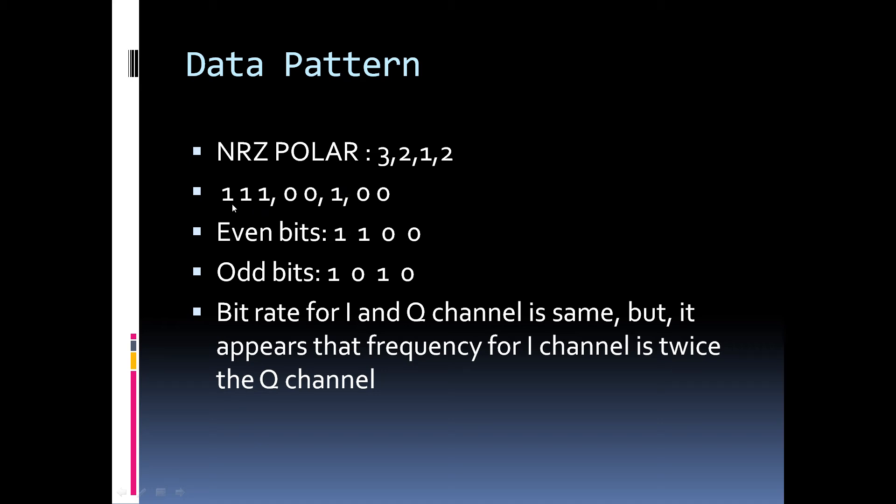Now, if we split this 8-bit data into even and odd bits, then it actually reads like 1, 1, 0, 0 and 1, 0, 1, 0. So, bitrate for both I and Q channel is same, but it appears that the frequency for I channel is twice that of the Q channel.